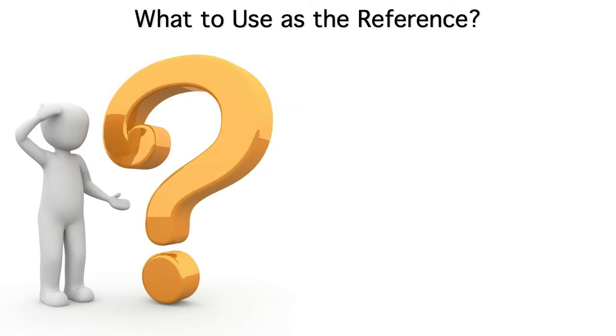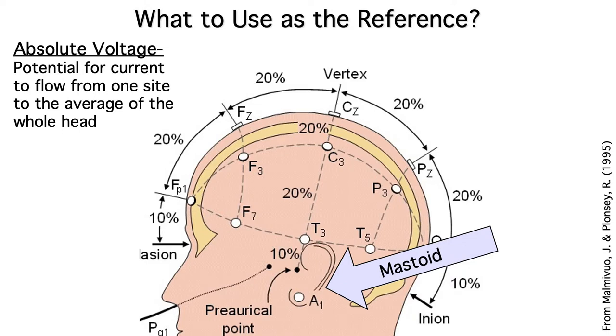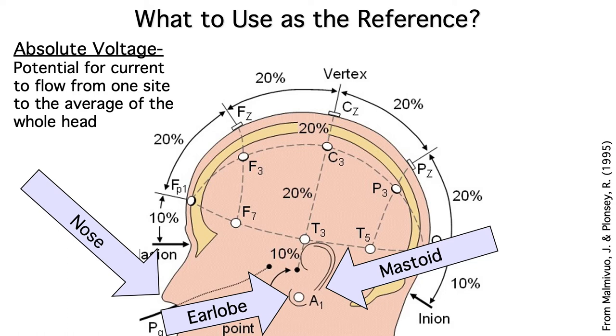So what location should be used as the reference? A lot of people use the average of the mastoids or the average of the earlobes. Some people use the tip of the nose. All of these reference locations became popular many decades ago because they seemed like they'd be electrically neutral.